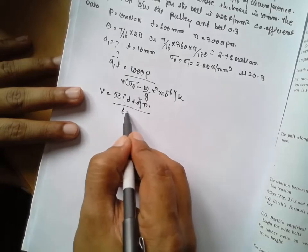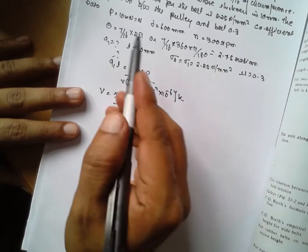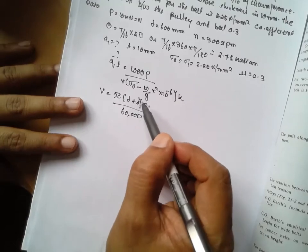N1 divided by 60,000. Either you can take n1 or n2, there is no difference here. In case of flat belt you have to consider thickness. In case of V belt don't consider the thickness.